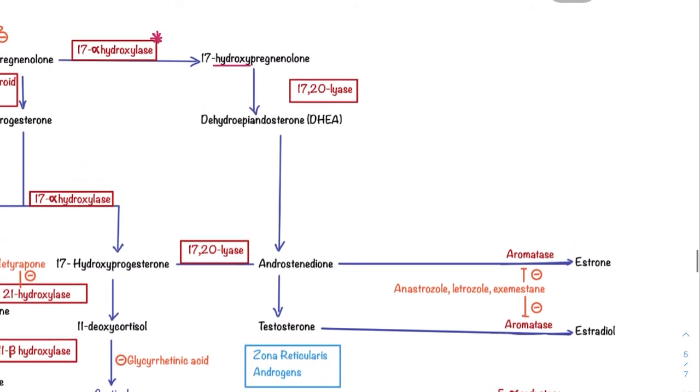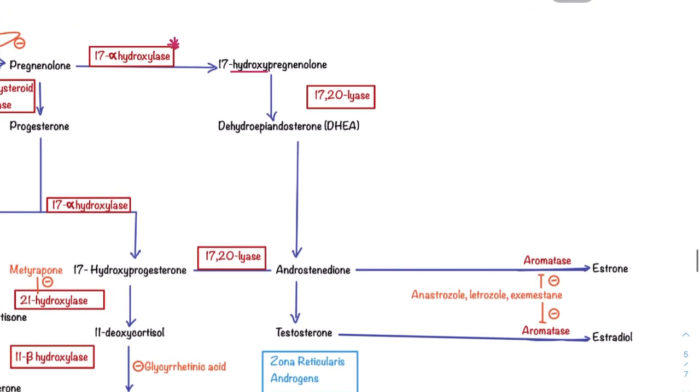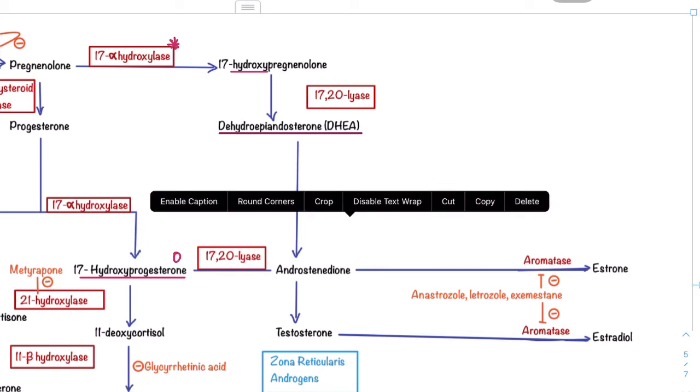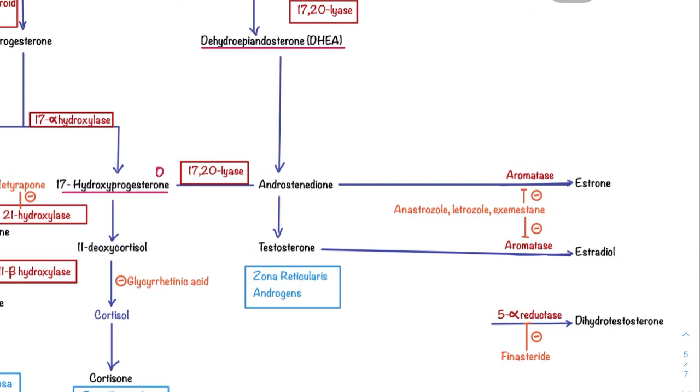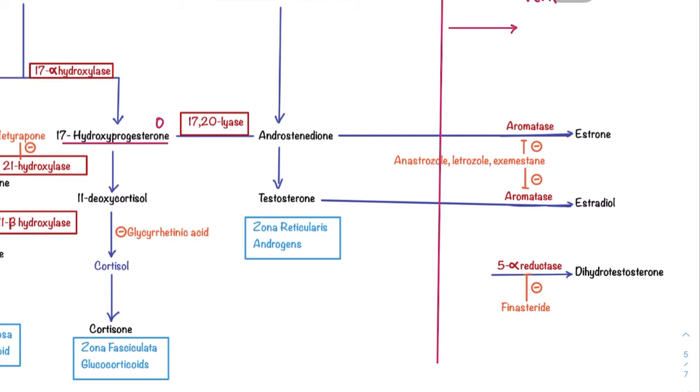Let's take a look at this pregnenolone pathway. It has formed DHEA, and the 17-hydroxy progesterone that went this way will also enter the 17-20 lyase route, forming androstenedione. The androstenedione can go directly into peripheral tissues, or it can convert to testosterone in the zona reticularis of the adrenal gland. If it forms testosterone, that too will go into the peripheral tissues.